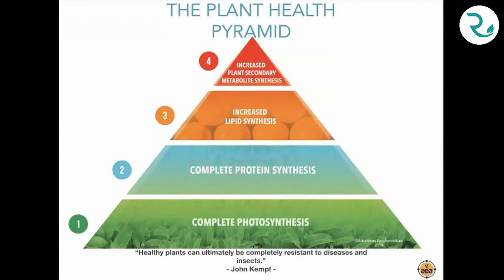The plant health pyramid came about as a result of working with different growers producing many different crops in different regions and climates. We observed that crops became resistant to different types of diseases and insects based on what was happening with plant physiology, and we noticed four fairly distinct stages where plants became resistant to four different groups of diseases, insects, and pests.